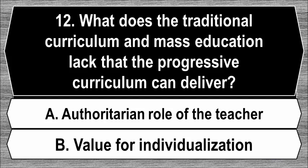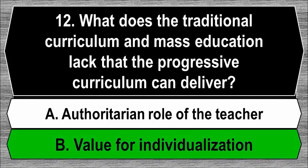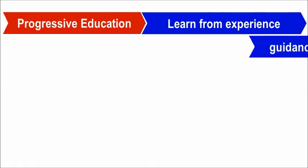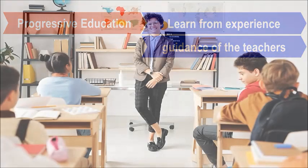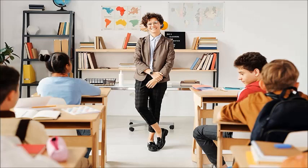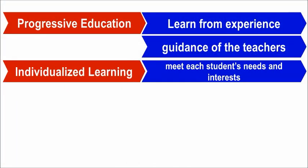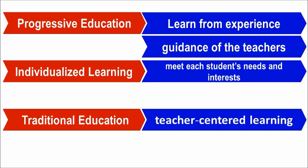Question 12. What does the traditional curriculum and mass education lack that the progressive curriculum can deliver? A. Authoritarian role of the teacher. B. Value for individualization. The best answer is B, value for individualization. In the progressive approach, learning is something students must experience through the guidance of their teachers and environment, mostly through experiences, collaboration, and play, allowing teachers to meet each student's needs and interests — that is, individualized learning. In contrast, traditional approach students are expected to learn as soon as information is given, with the teacher as the central figure.